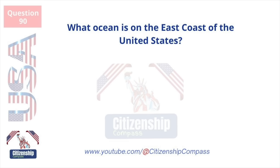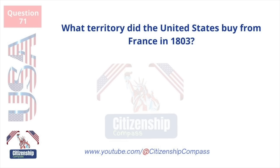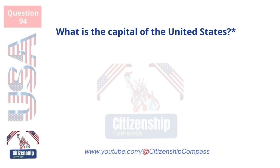What ocean is on the east coast of the United States? Atlantic Ocean. What territory did the United States buy from France in 1803? The Louisiana Territory. What is the capital of the United States? Washington, D.C.